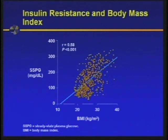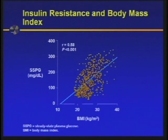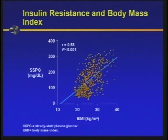There is clearly an association between insulin resistance and body mass index or obesity. Here's a nice graph from about 500 patients done mostly from Dr. Riven's work. Our measure of insulin resistance is called a steady state plasma glucose — the higher the number, the more insulin resistant the individual. There's a linear association between increasing BMI and increasing insulin resistance, but you can see a tremendous amount of variability at any given BMI.